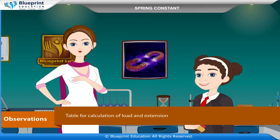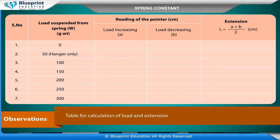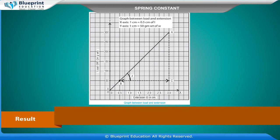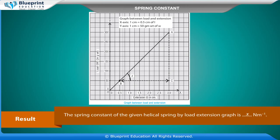Table for calculation of load and extension: Load suspended from spring W (gram weight), reading of the pointer (cm) — load increasing A, load decreasing B, and extension L = (A + B) / 2 (cm) — for loads 0, 50 (hanger only), 100, 150, 200, 250, 300. Result: The spring constant of the given helical spring by load-extension graph is x newton per meter.